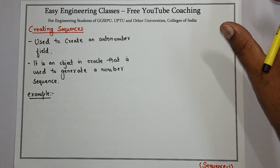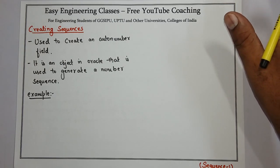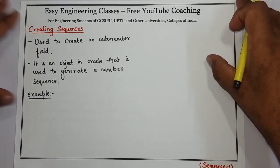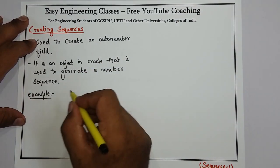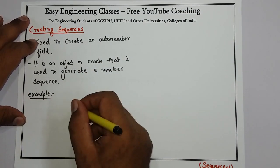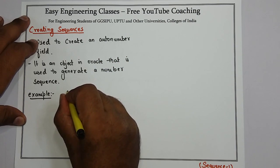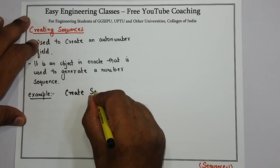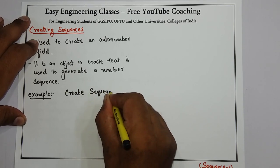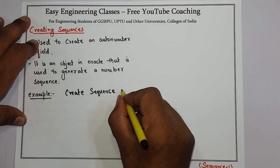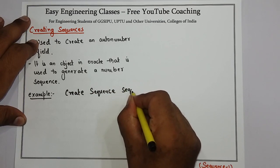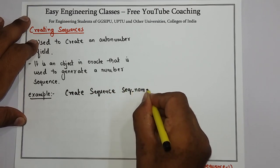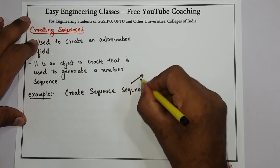Now let's see what is the syntax of creating a sequence in Oracle 11g database. So to create a sequence you have to use create sequence statement. It is written like this: create sequence then the name of the sequence. So I am writing sequence underscore name. It is the name of the sequence.